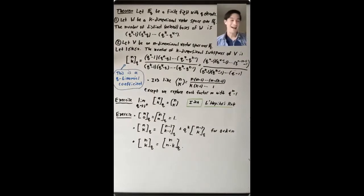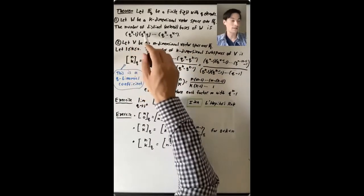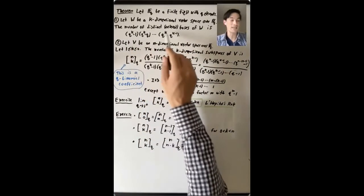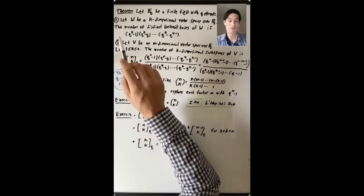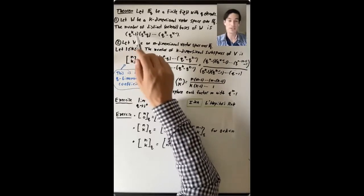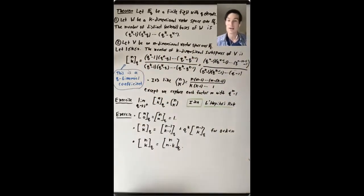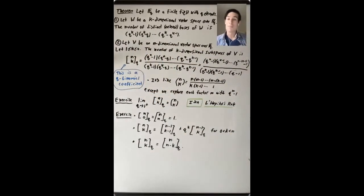This product of nicely-formed terms signals that we're making a series of choices. We have q^k minus 1 choices to make first, and then q^k minus q choices next, and so on. This product is a sign that the argument will proceed by building our basis one vector at a time.